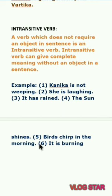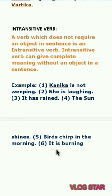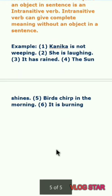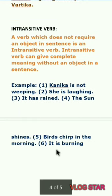'She is laughing,' 'It has rained,' 'Sun shines,' 'Birds chirp in the morning,' 'It is burning' — the verbs used in all these sentences: weeping, laughing, rain, shines, chirp, burning — none of these sentences need an object to give complete meaning. So these are the intransitive verbs. Okay students, thank you, thanks a lot for watching this video. Okay, bye bye.